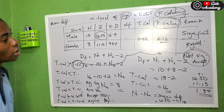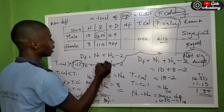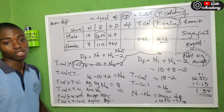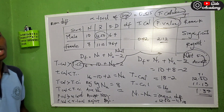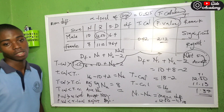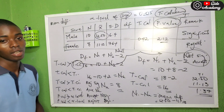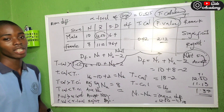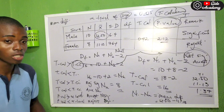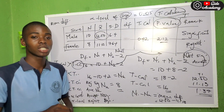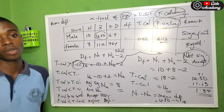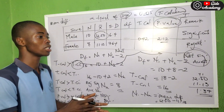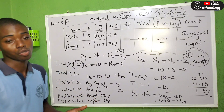There are two types of errors to note. Type one error: if the null hypothesis is true but you reject it, you have committed a type one error. For example, if there is truly no significant difference between biology and chemistry students but you rejected that null hypothesis, that is a type one error. Type two error: if the null hypothesis is false but you accept it, you have committed a type two error.